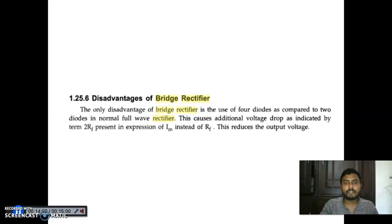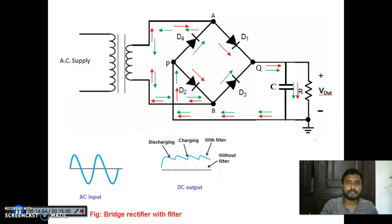The major disadvantage of the bridge circuit is that four diodes are used. In the next class, we will see the Zener voltage regulator.